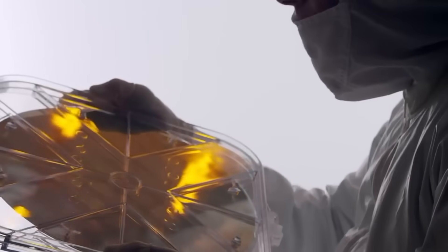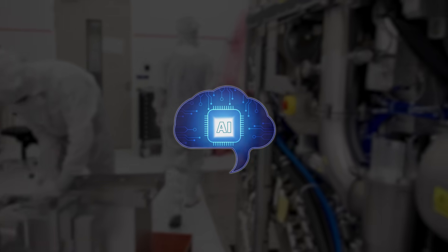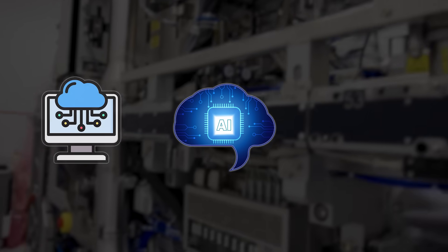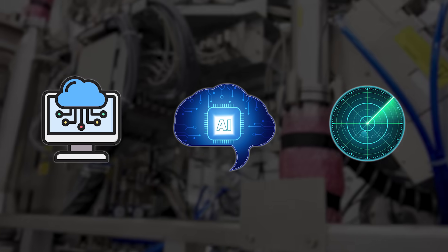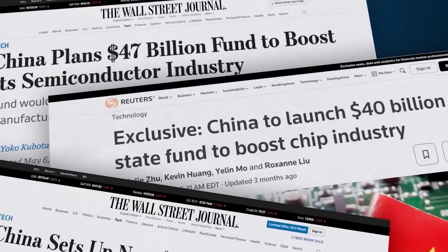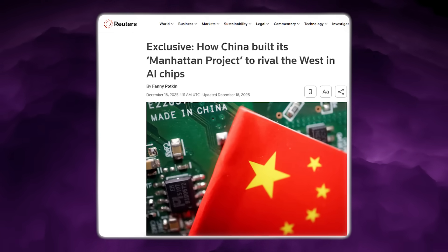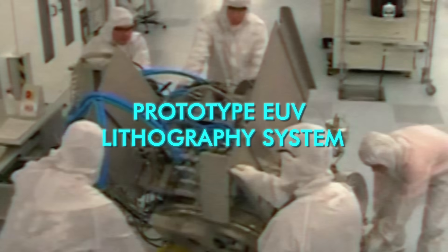And without those chips, it could not compete at the highest levels of artificial intelligence, advanced computing, or modern weapon systems. But that assumption is now under pressure, because according to a detailed investigation by Reuters, a high-security laboratory in Shenzhen has quietly assembled a prototype EUV lithography system.